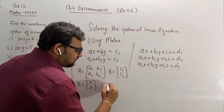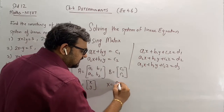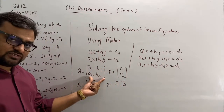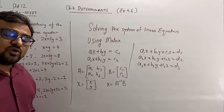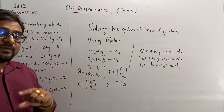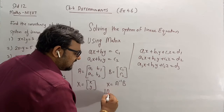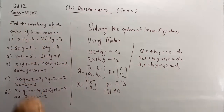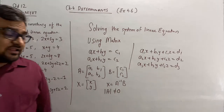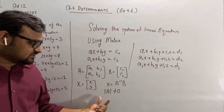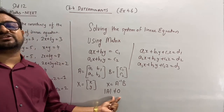So what is our formula? Our formula is X equal to A inverse B. So first you need to find out A inverse. The formula for A inverse is 1 upon determinant value of A into adjoint of A. But for that, the determinant value of A must not be equal to 0. If this is the case, then only we will say that the linear equation is consistent. If the determinant is equal to 0, that means the linear equation is not consistent.